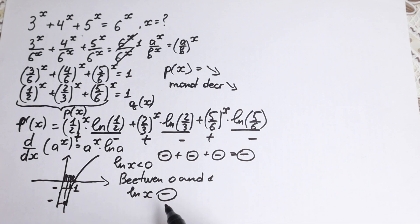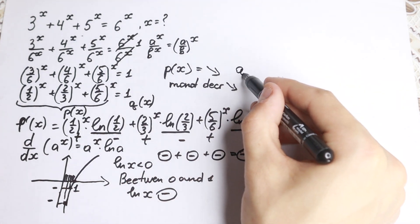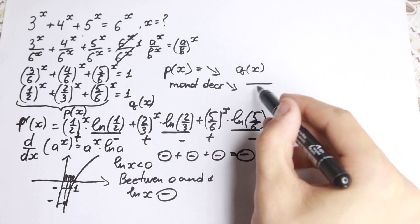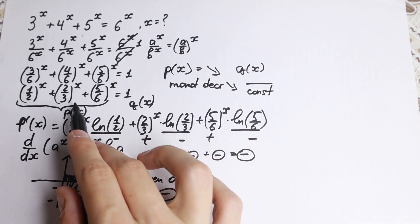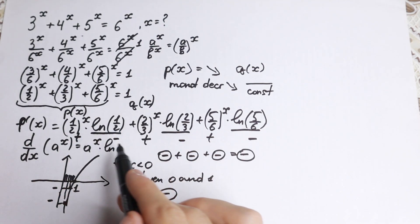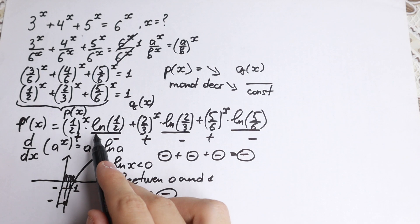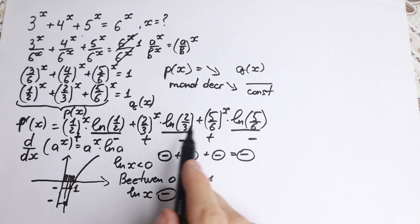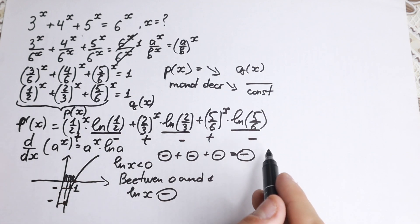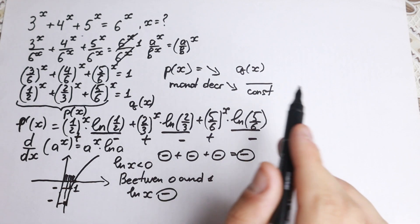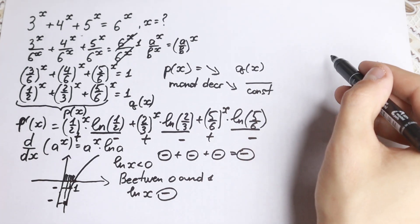What about our function on the right-hand side? On the right-hand side we have one, which is a constant. So q(x) is a constant function — no positive, no negative, just a constant.